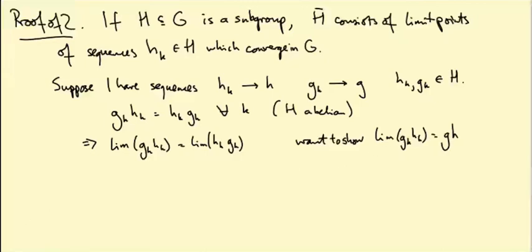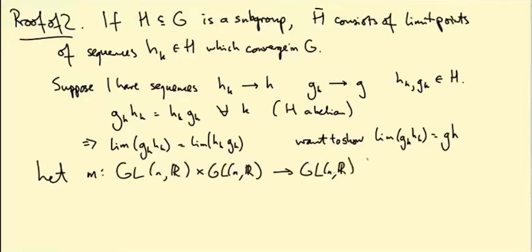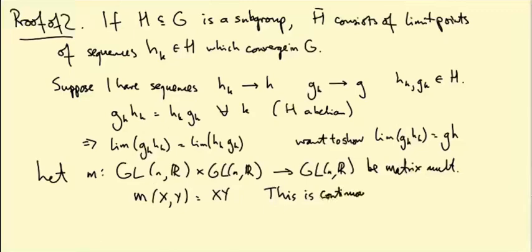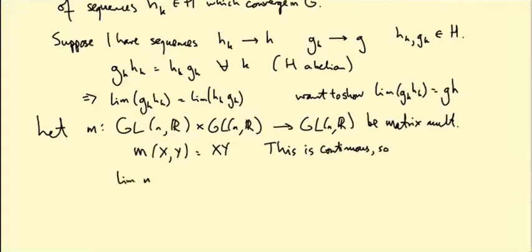But this just follows from the fact that matrix multiplication is continuous. So let m from GL(n,R) times GL(n,R) to GL(n,R) be matrix multiplication. In other words, m(x,y) equals x times y. This is continuous. It's actually polynomial in the matrix entries, so it's very much continuous.